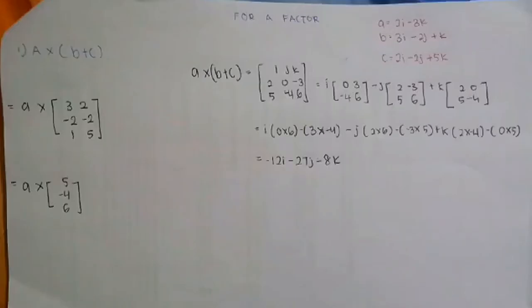Assalamualaikum. Saya bernama Puan Slih. Nombor matrik DEP 20F100. Diberi soalan A bersama dengan 2I tolak 3K. B bersama dengan 3I tolak 2J tambah K. Dan C bersama dengan 2I tolak 2J tambah 5K. So, kita akan selesaikan secara penyelesaiannya. Kita akan selesaikan dalam kurungan dulu. B tambah C. Kita letak nombor dan susun cara menegak. 3, 2, negatif 2, negatif 2, dan 1, 5. Dan kita selesaikan. Dan jawapan akhir dia adalah 5, negatif 4 dan 6.